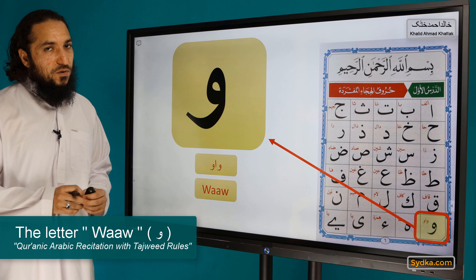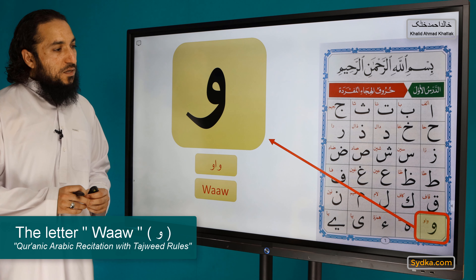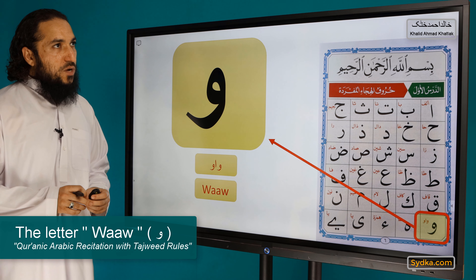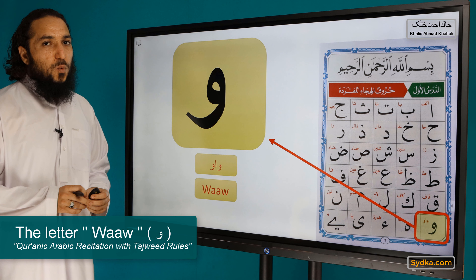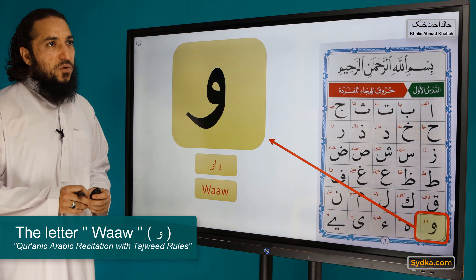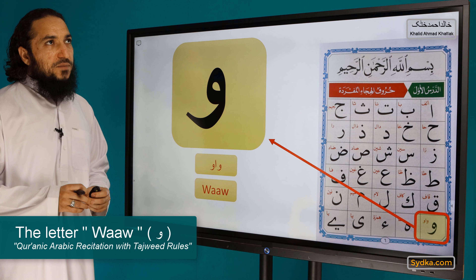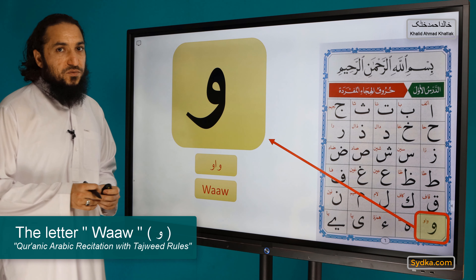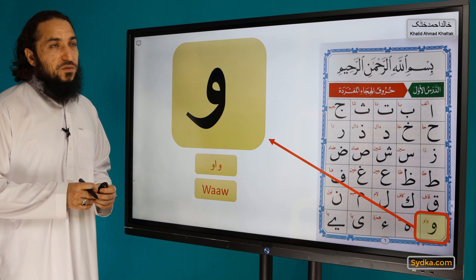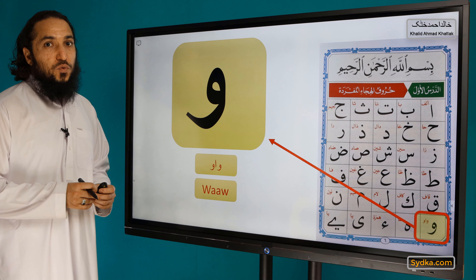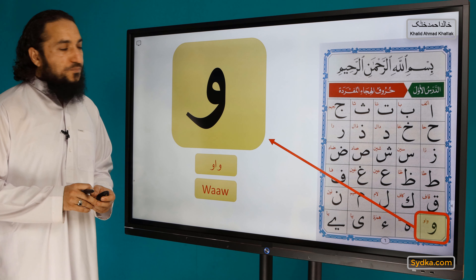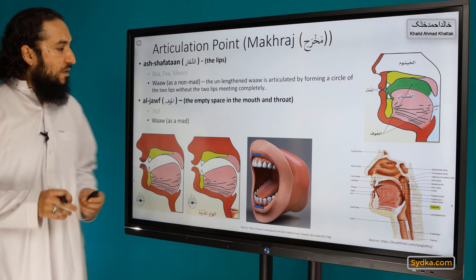The letter is called Waaw, pronounced as Waaw, and the sound is 'oh'. There are actually two sounds: when it is used as a consonant the sound is 'oh', and when it is used as a vowel the sound is also 'oh'. So there are two sounds for Waaw, which I will explain.